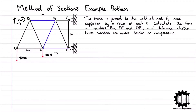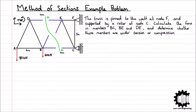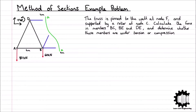We must cut the truss through the members we are interested in solving, which for us is BC, BE, and DE, so our cut will follow this line — we will call the cut AA. Cut AA divides the truss into two separate structures, which we will now treat as two independent trusses. Notice that we have divided the original truss such that both reaction forces are on the right hand truss. From now on we will only consider the left hand truss, so we can disregard the right hand truss and therefore no longer need to consider the reaction forces at the supports.